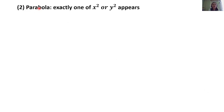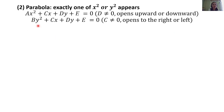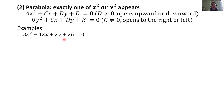For a parabola, exactly one of x squared or y squared appears. If we have Ax squared plus Cx plus Dy plus E = 0 where D is not equal to 0, it's a parabola opening upward or downward. If we have By squared plus Cx plus Dy plus E = 0 where C is not equal to 0, we have a parabola opening either to the right or to the left.